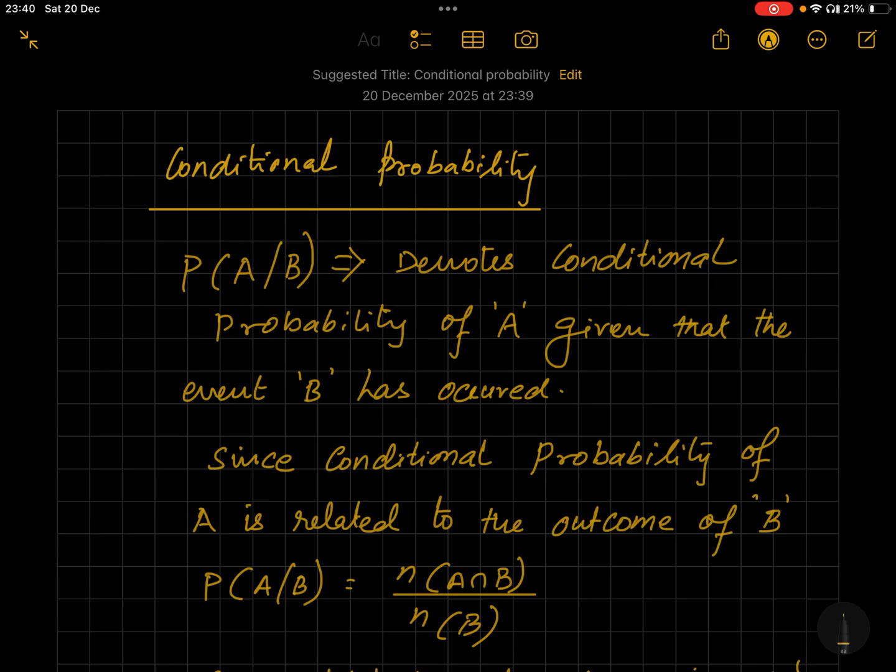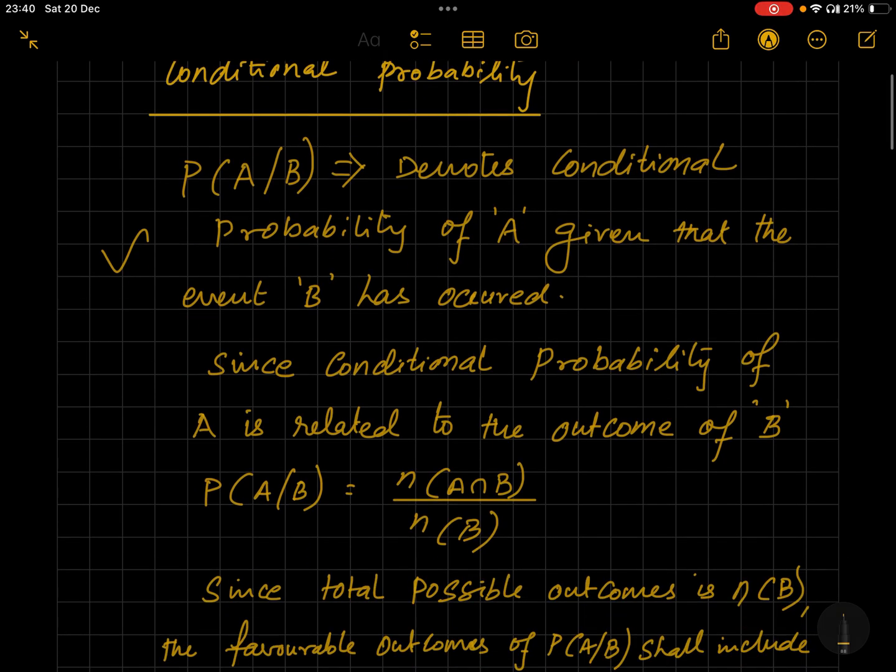If you are having all these doubts, this video is definitely for you. Hi everyone, welcome to the channel Math Logic. Let's discuss today conditional probability. So what is it? P(A/B) denotes conditional probability of A given that the event B has occurred.